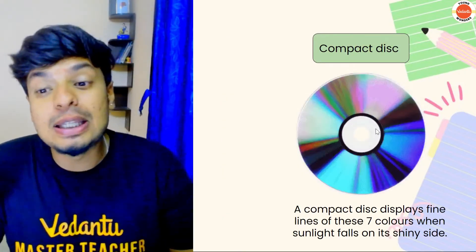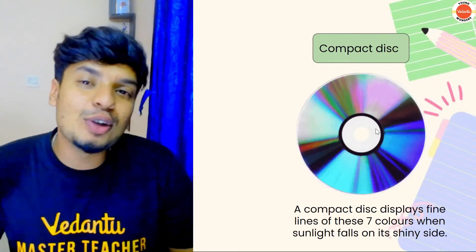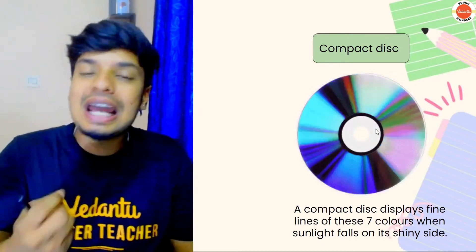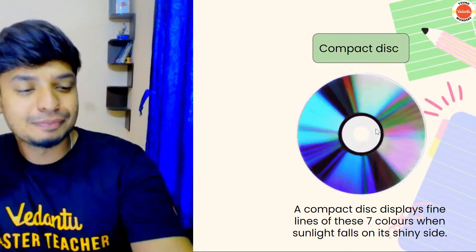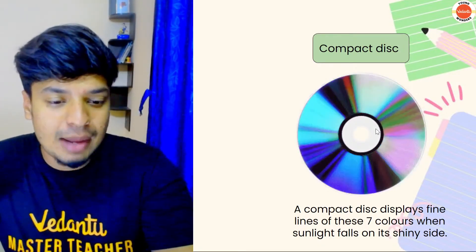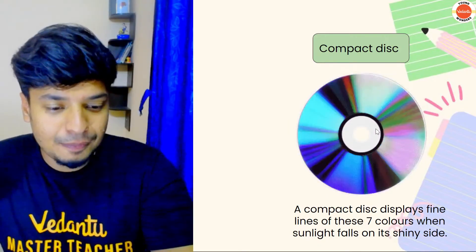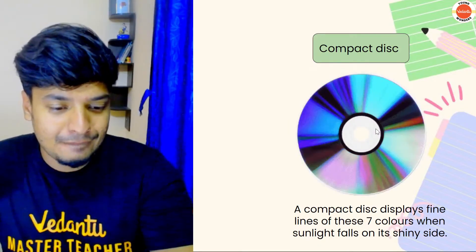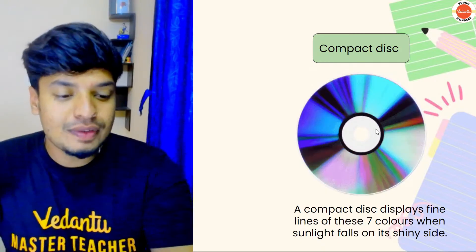This same thing happens in the compact disc also. Whenever light shines on a compact disc, dispersion happens there too. How many of you guys have seen dispersion happening in a compact disc? You have seen it!